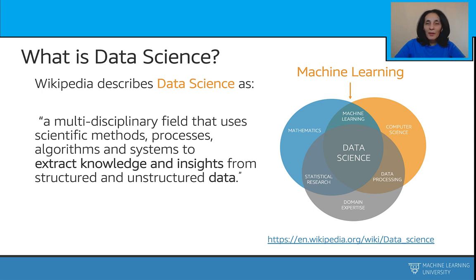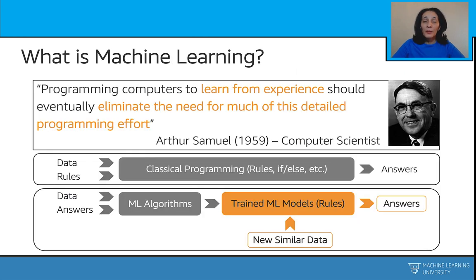Speaking of mathematics and computing, this is where machine learning comes in. So what is machine learning? Arthur Samuel, an American computer scientist, IBMer, and pioneer of artificial intelligence, coined the term in 1959, stating that programming computers to learn from experience should eventually eliminate the need for much detailed programming effort. In other words, ML — machine learning — is teaching a machine to learn how to do a task through algorithms that can learn from experience without relying on rule-based programming.